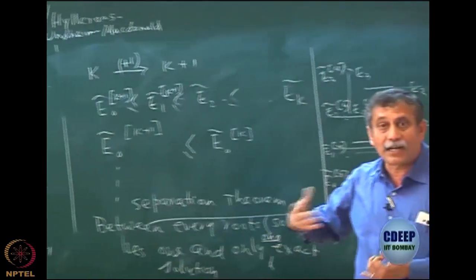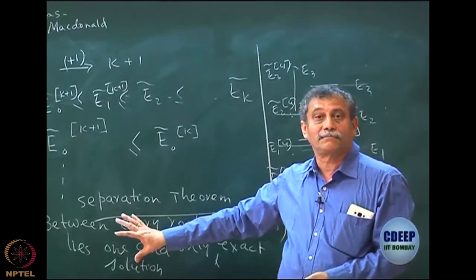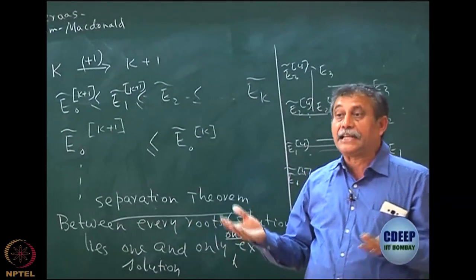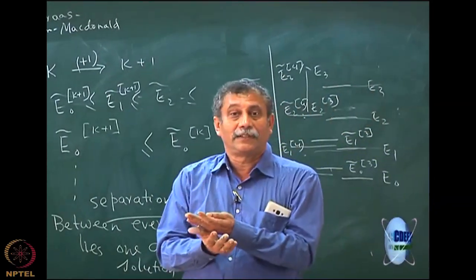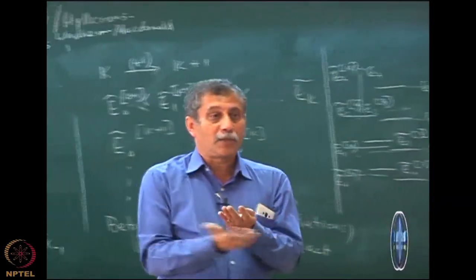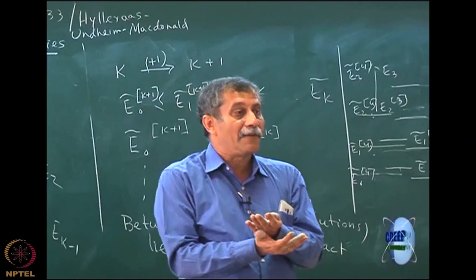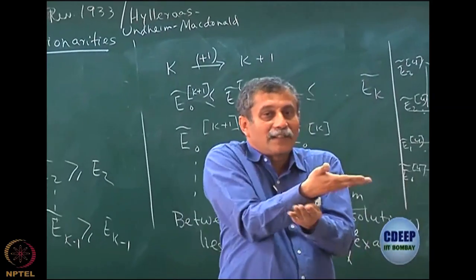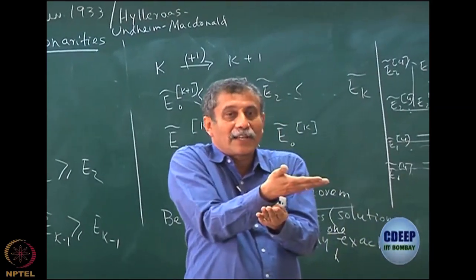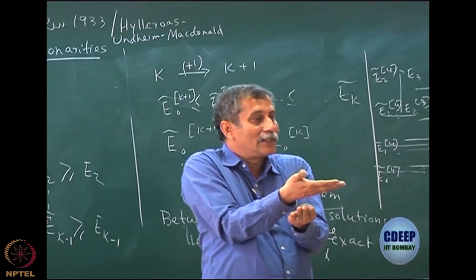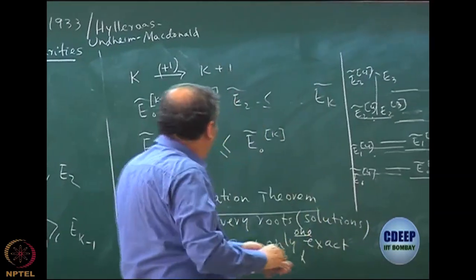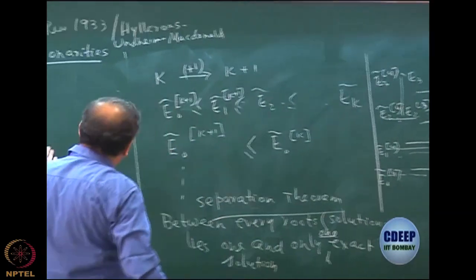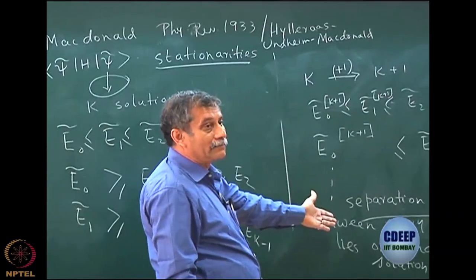What MacDonald did was to prove this theorem. Many times this is called the interleaving theorem — interleaving means there are two leaves and in between there is one exact solution. So it is an interleaving theorem or separation theorem, and this comes directly from the proof.